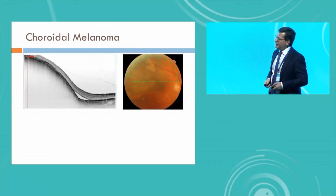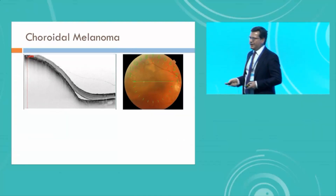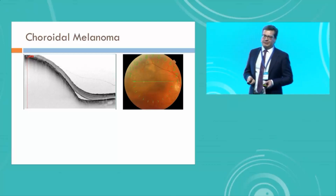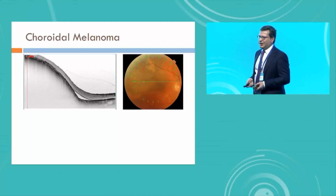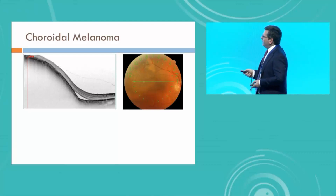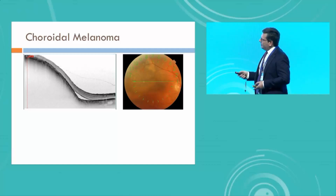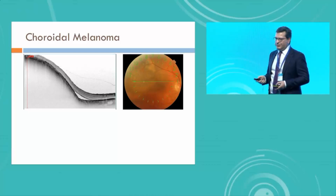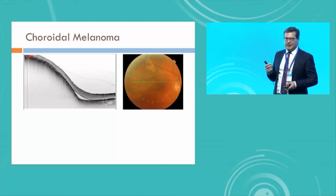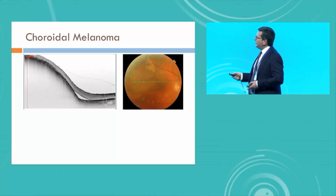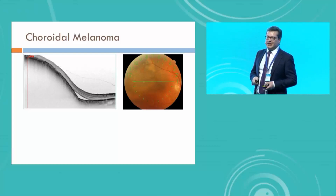What about melanomas? In melanomas there are two major limitations. The first is that the scan is just 2.5 mm deep, and most melanomas are greater and thicker than 2.5 mm, so in most cases you won't be able to document the whole tumor. But you still see a lot of details. The second problem is that the OCT signal, compared to nevi, is lost very early on the top of the tumor. In melanomas you lose the signal about 250 microns under the RPE.